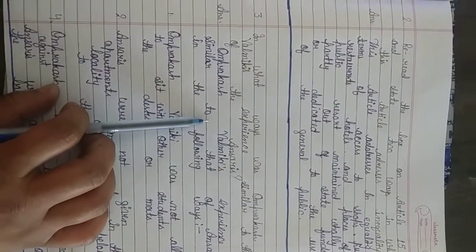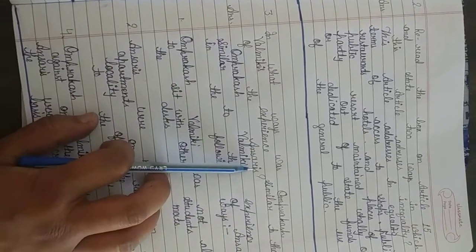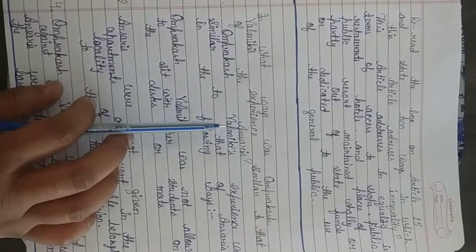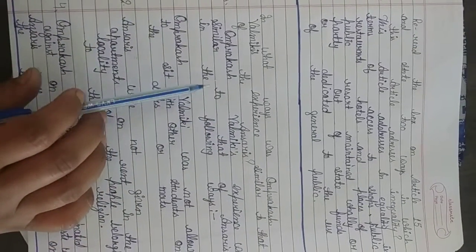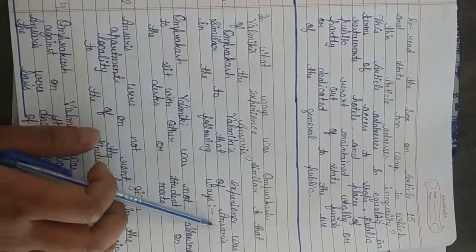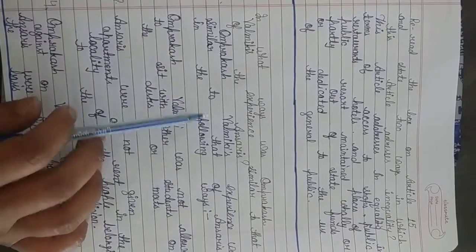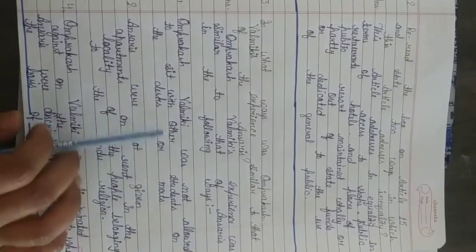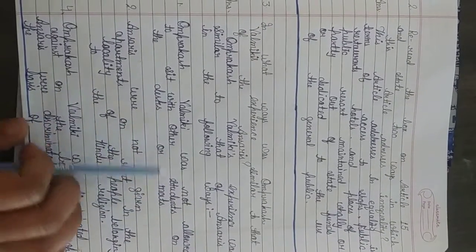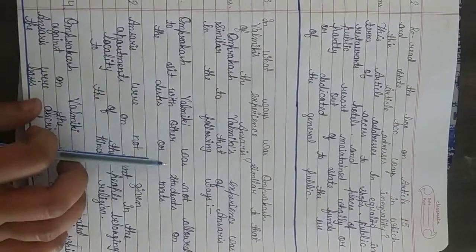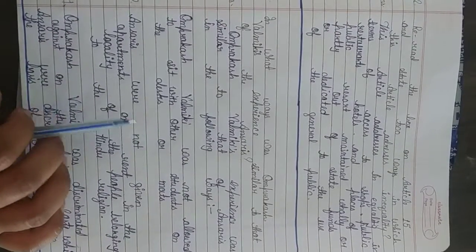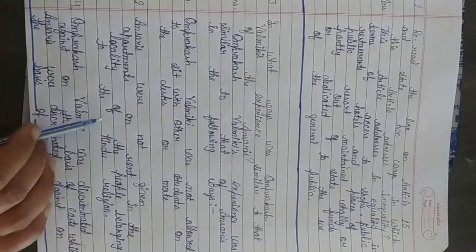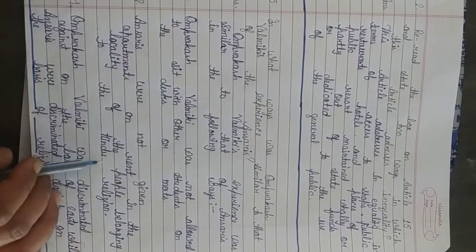In what ways was Om Prakash Valmiki's experience similar to that of the Ansaris? Now, Om Prakash Valmiki's experience was similar to that of Ansari in the following ways. First, Om Prakash Valmiki was not allowed to sit with other students on the desks or mats. Ansari was not given an apartment on rent in the locality of people belonging to the Hindu religion.